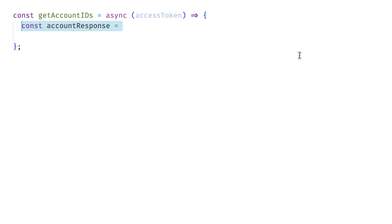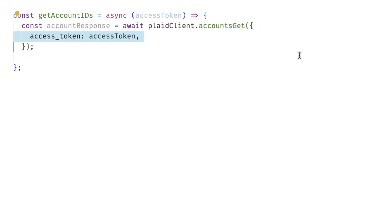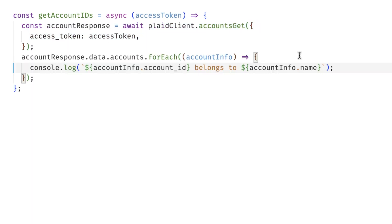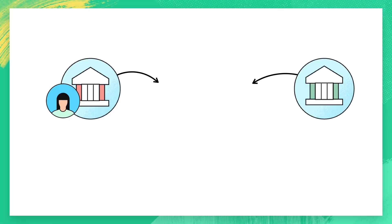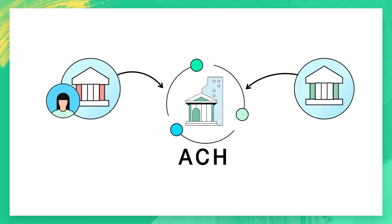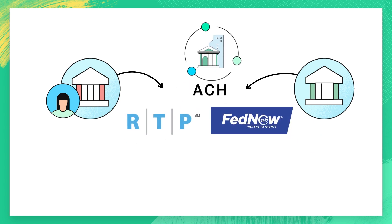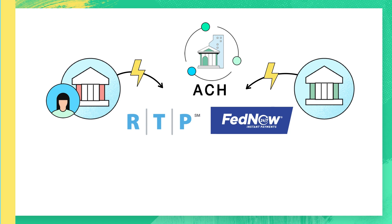You can then fetch information about the user's accounts by calling accounts/get. This will include, among other information, an internal ID that Plaid uses to identify this account. For sending money, Plaid supports ACH, the classic network for moving money between banks, but it also supports FedNow and RTP, two new real-time payment methods for instant payouts.